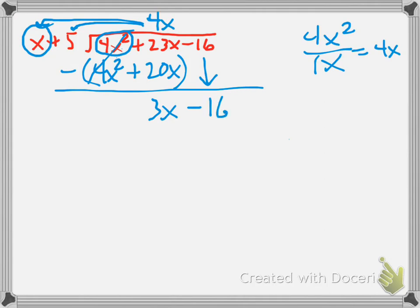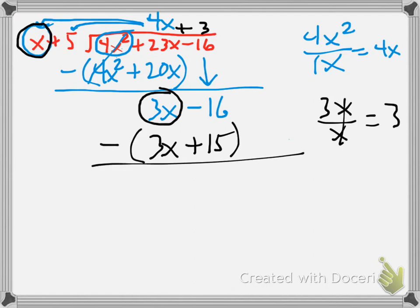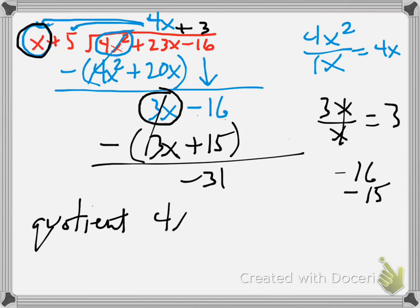Now I'm going to subtract that whole thing. 4x squared minus 4x squared cancels. 23x minus 20x is 3x. So now I bring down the minus 16. I'm going to take this x and put it into 3x. So 3x divided by x — the x's cancel and what's left is 3. So now I take the 3 times x plus 5, which gives me 3x plus 15. I subtract that. 3x minus 3x cancels. Be careful — this is negative 16 subtract 15, which is really negative 16 minus 15. That's negative 31. So the quotient is 4x plus 3 and the remainder equals negative 31.